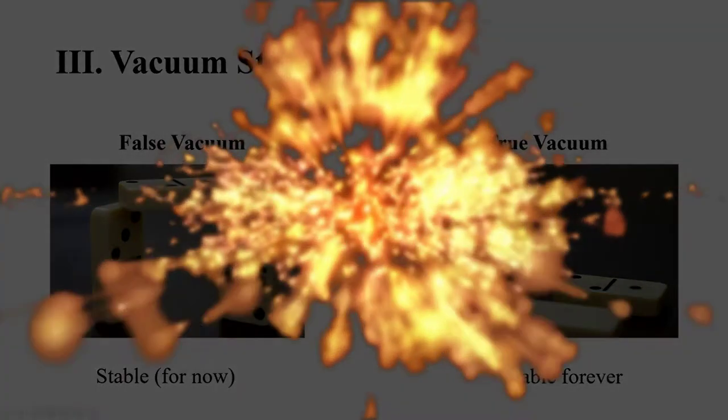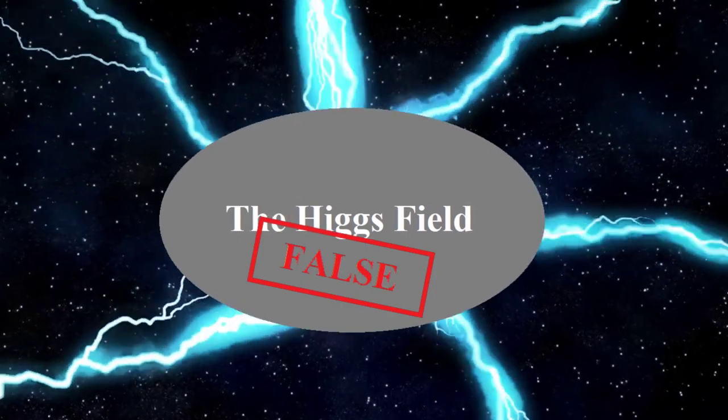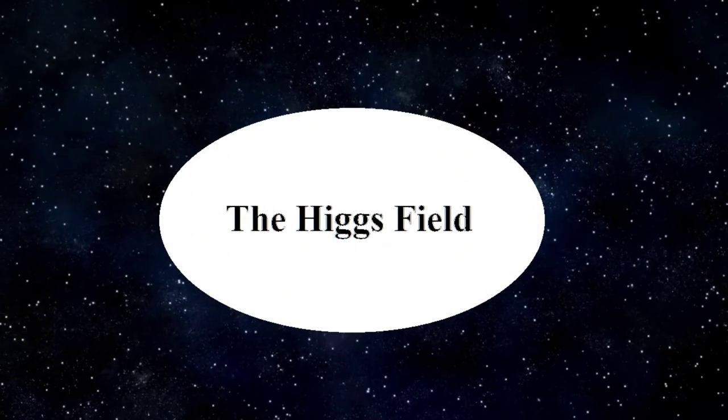So, let's go back to how the universe can get destroyed. Physicists currently believe that the Higgs field is a false vacuum. Since it's unstable, the field may suddenly transition into a true vacuum without warning. This is called vacuum decay.